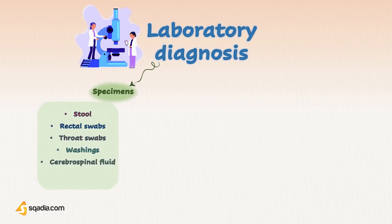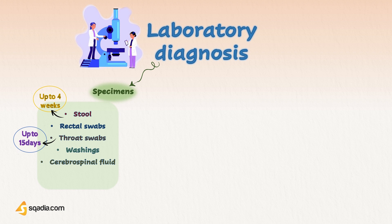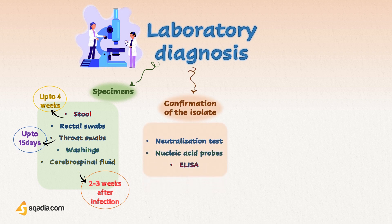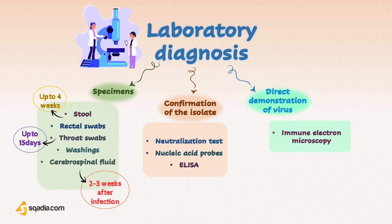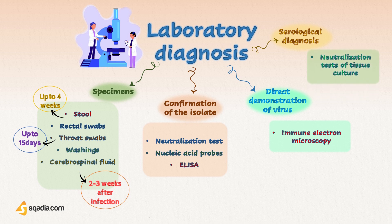Laboratory diagnosis can be done via specimens. Specimens for virus isolation are usually stool and rectal swabs, throat swabs and washings, and cerebrospinal fluid. Virus is most readily isolated from throat specimens shortly after infection and up to 15 days or more; from stool and rectal swabs up to 4 weeks after infection; and from the CSF during clinical manifestations and 2 to 3 weeks after infection. For confirmation, a neutralization test is done, along with nucleic acid probes and/or ELISA. Direct virus visualization and immune electron microscopy can also be performed on stool specimens, and serological diagnosis can be made by neutralization test using tissue cultures.